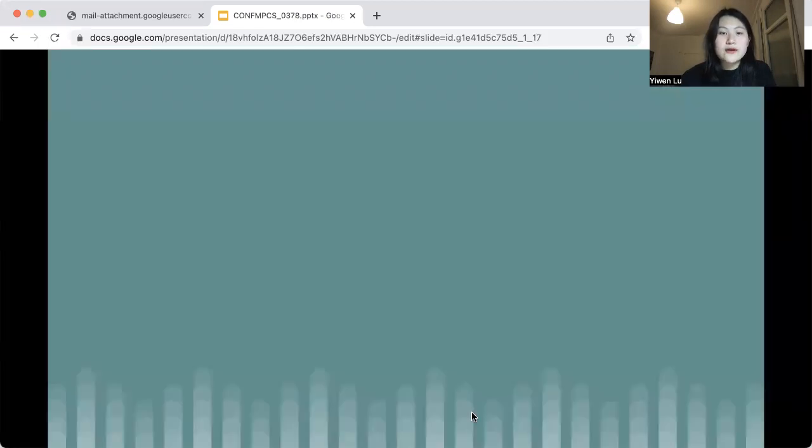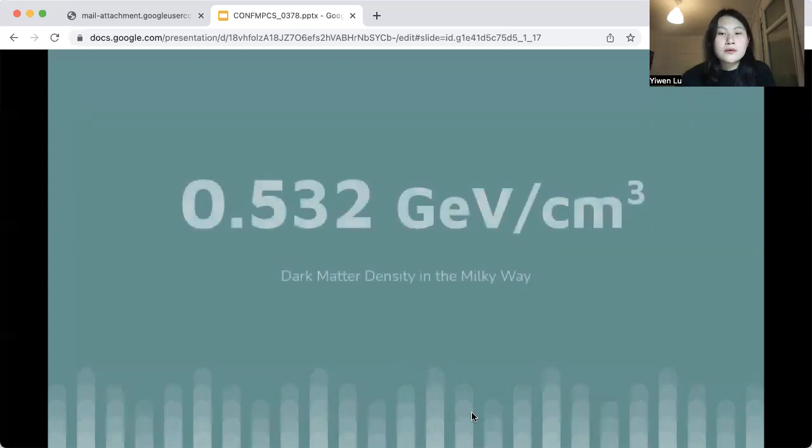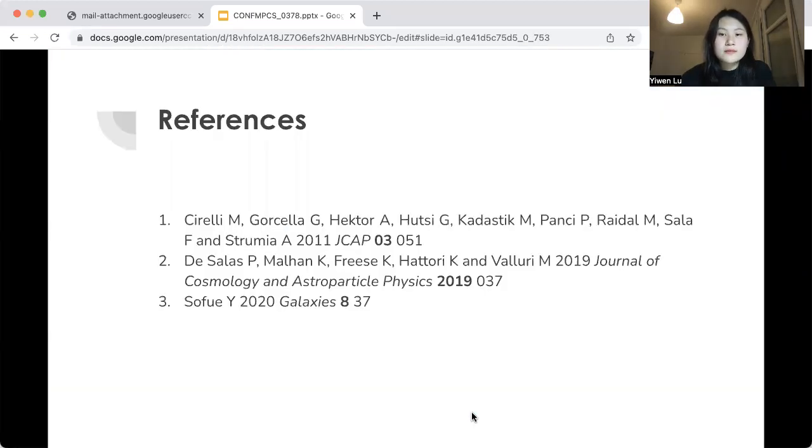And for our final result, the density of dark matter in the Milky Way, at least using the NFW profile, was 0.532 gigaelectron volts per cubic centimeters. These are my references, and thank you for listening.